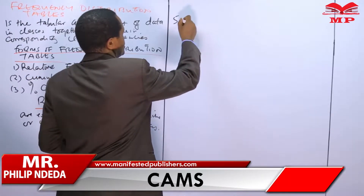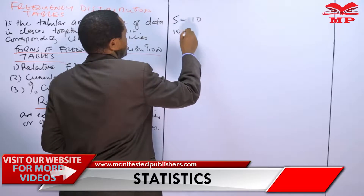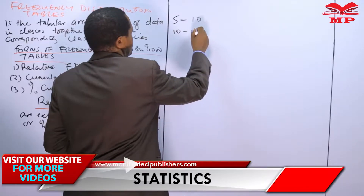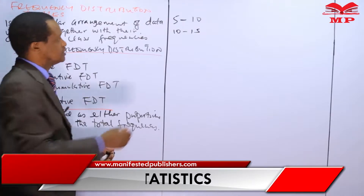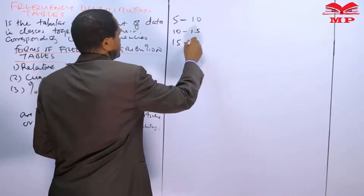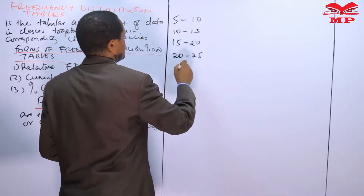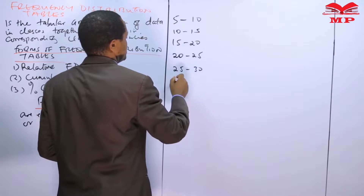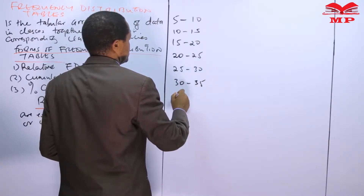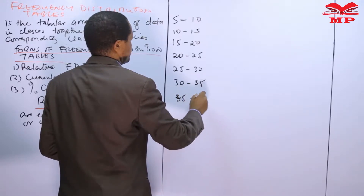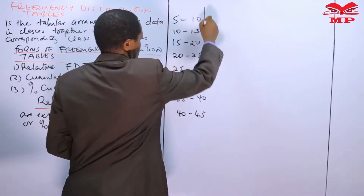The classes were: 5 to 10, 10 to 15, 15 to 20, 20 to 25, 25 to 30, 30 to 35, 35 to 40, and 40 to 45. These were the classes.